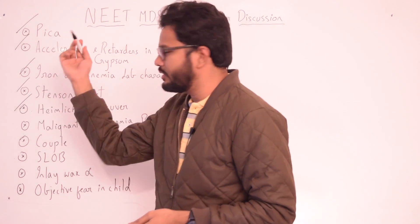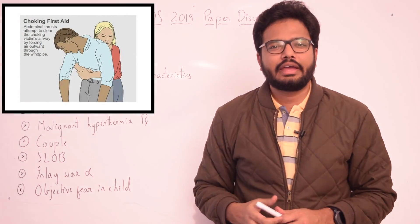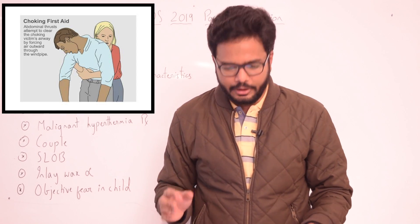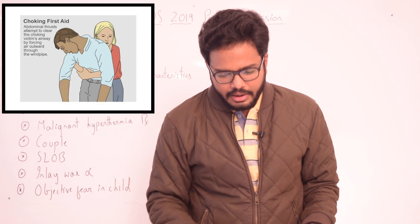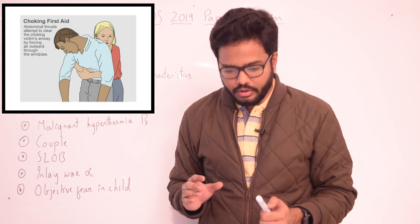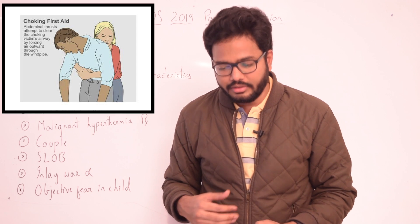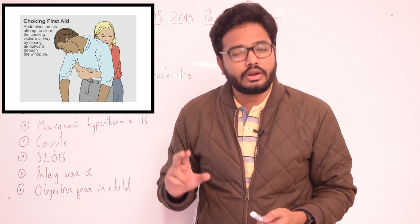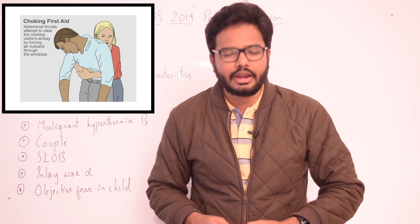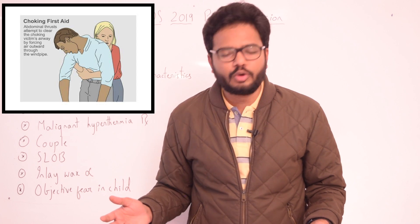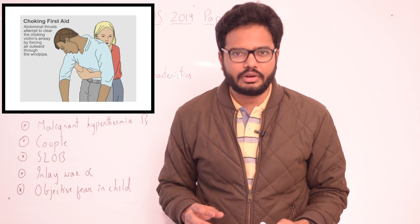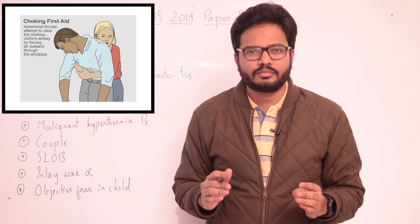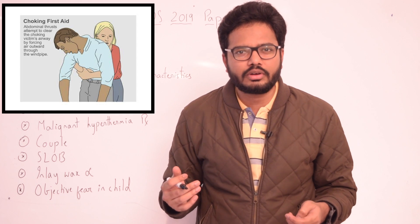Moving on to the Heimlich maneuver. This is used in emergencies when there is foreign body obstruction in the airways. The Heimlich maneuver is used when a person is choking on a foreign object to the extent that he or she cannot breathe. Oxygen deprivation from a foreign body airway obstruction can result in permanent brain damage or death in four minutes or even less.